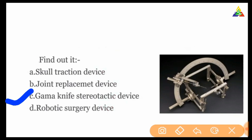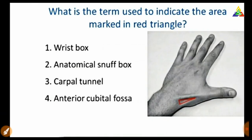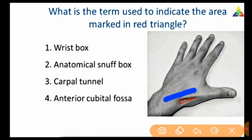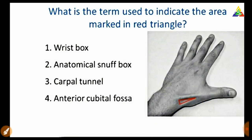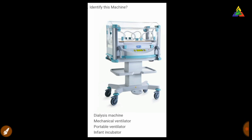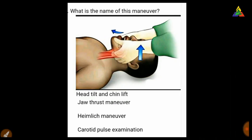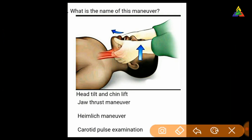This is a Gamma Knife Stereotactic Device. What is the term used to indicate the area marked in red? This is called the anatomical snuff box. Identify this machine — this is an infant incubator. What is the name of this maneuver? This is the jaw thrust maneuver.